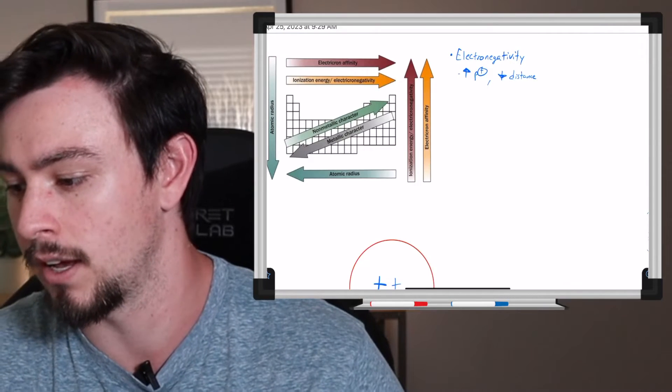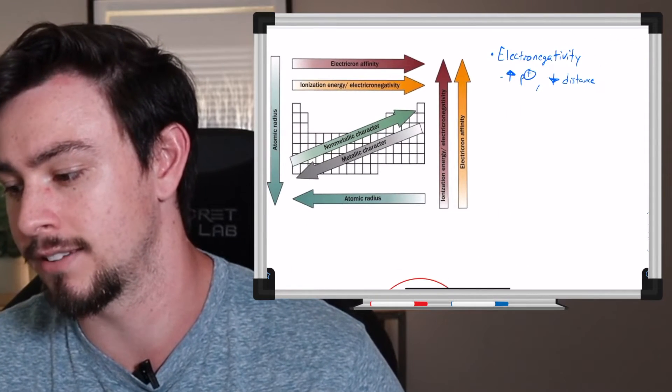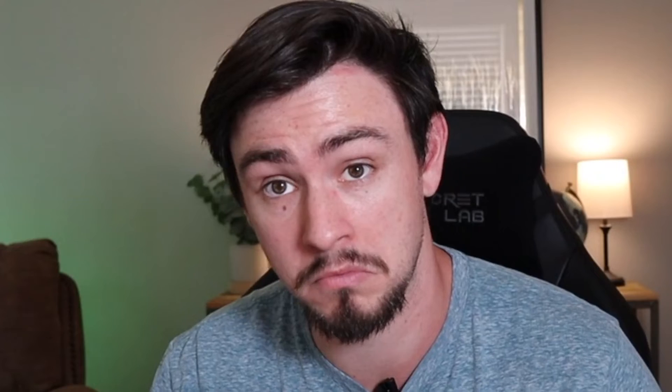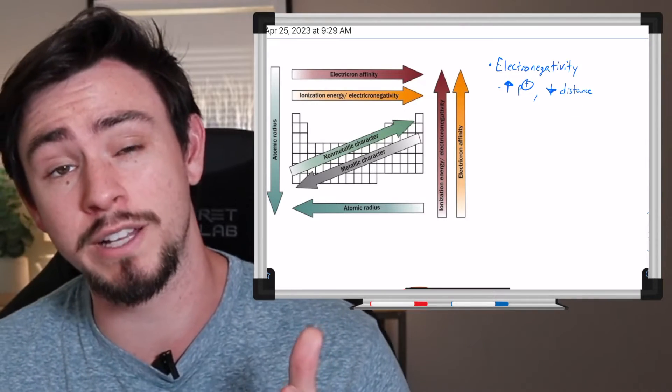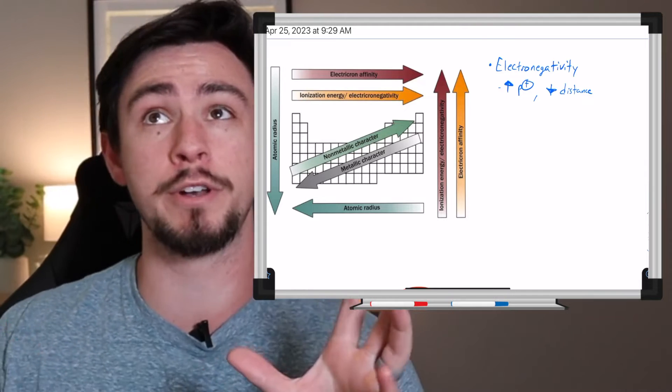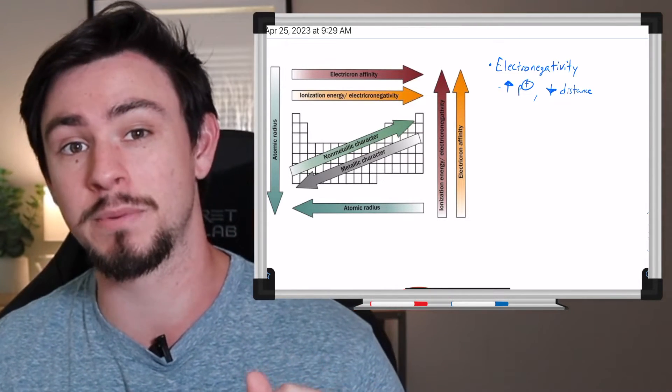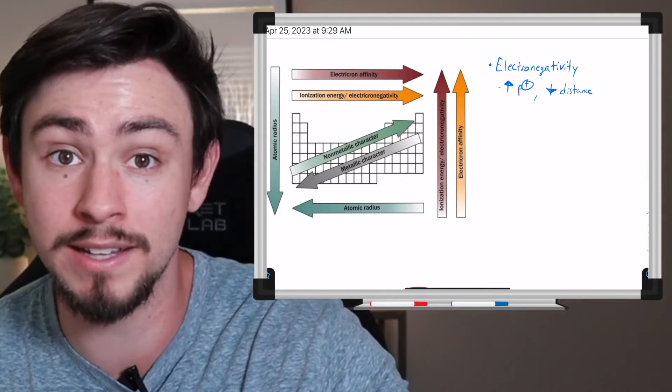And so some people call it electric negativity, but it's electronegativity. I'm just now noticing this typo. We have a low budget. So let's talk about electronegativity because I think this is actually going to open up your understanding of some of the physics behind electromagnetism.